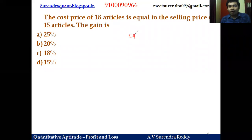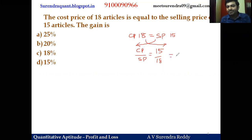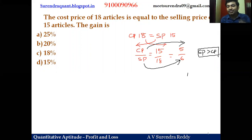Next question: the cost price of 18 articles is equal to the selling price of 15 articles — find the gain percent. The CP to SP ratio is 15 to 18, which simplifies to 5 to 6. For every 5 rupees of cost price, the selling price is 6 rupees — 1 rupee gain. SP is more than CP, so it is a gain case. 1 by 5 means 20 percent gain.